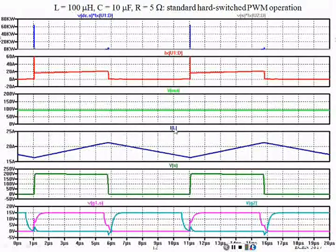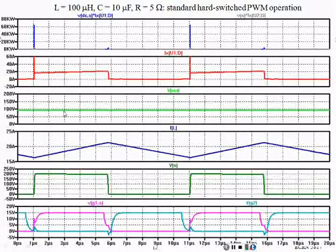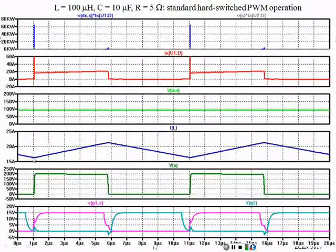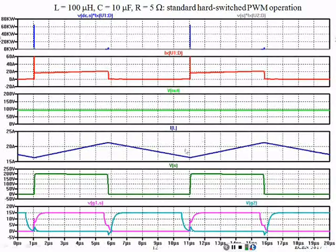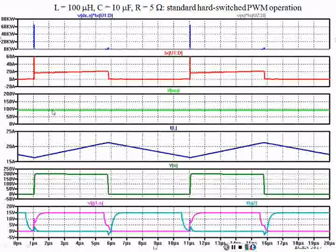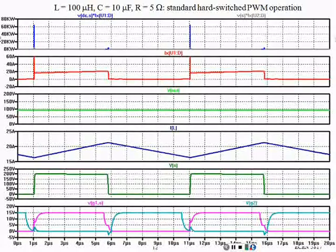Inductor current shows no big surprises. The output voltage is a little less than 100 volts because the waveforms are not giving exactly 50% duty cycle, so the output current is a little less than 20 amps — but no big surprises. A triangular waveform for the inductor current, and an output voltage waveform that looks basically like DC. At this scale, you can't even tell there is any remaining ripple in the output voltage.